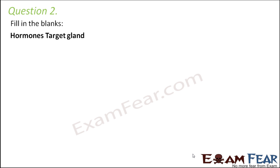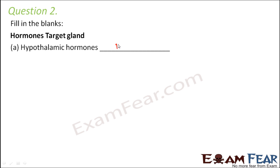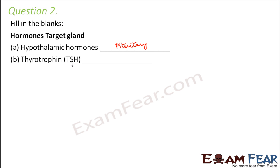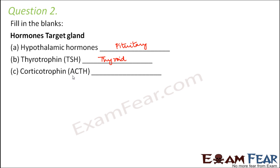Question number two: fill in the blanks — hormones and their target glands. Hypothalamic hormones control the pituitary gland, so their target gland is the pituitary. Thyrotropin (TSH) is secreted by the pituitary but targets the thyroid gland, as it controls the secretion of thyroid hormones. Corticotropin (ACTH) is also secreted by the pituitary, and its target gland is the adrenal cortex, which it regulates for hormone secretion.